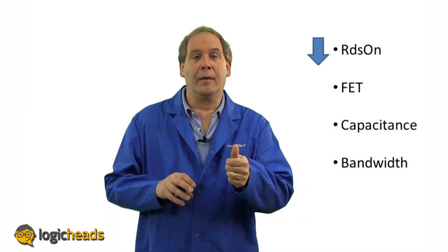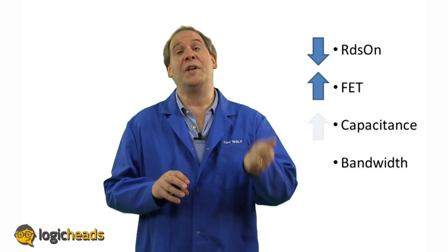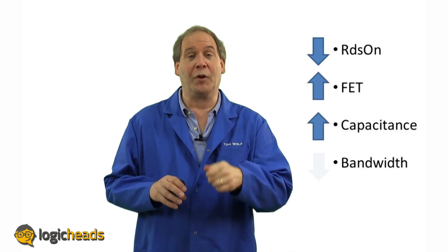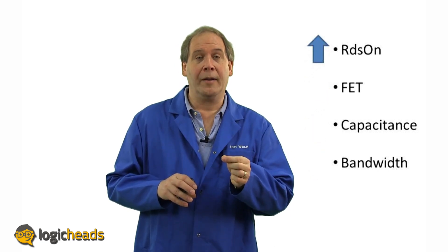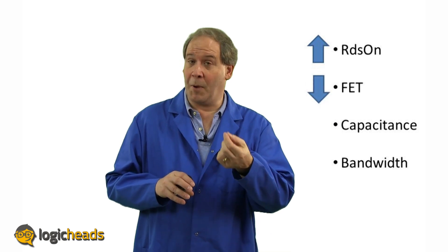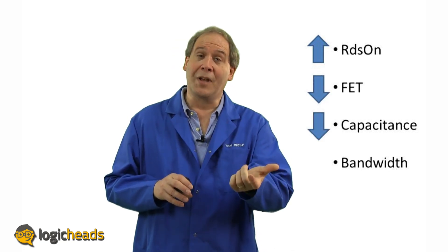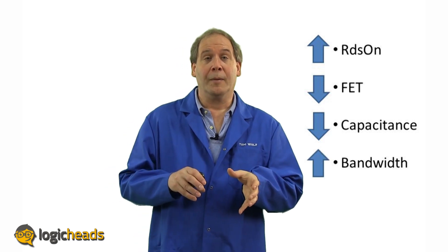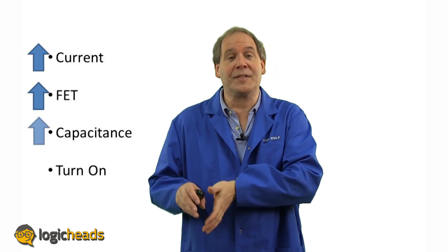That's been a lot of specifications, but an easy way to remember is to keep in mind that the size of the FET buried inside the switch controls everything. A lower RDS on means you have a bigger FET. A bigger FET means higher capacitance. Higher capacitance means lower bandwidth. A higher RDS on means you're using a smaller FET. A smaller FET has lower capacitance, which means higher bandwidth. And finally, higher current means you need a bigger FET to flow the current through, which means higher capacitance and a slower turn on. So it's all related — the size of the FET determines the capacitance, which determines the frequency response. You can't have one without the other.